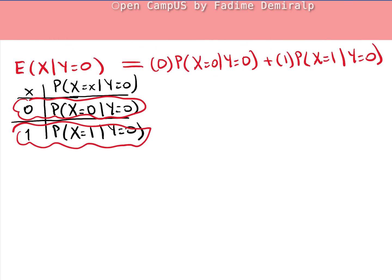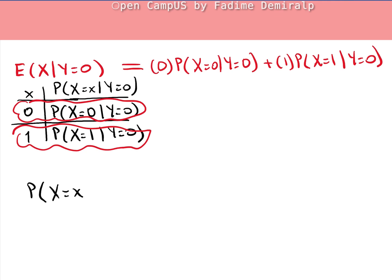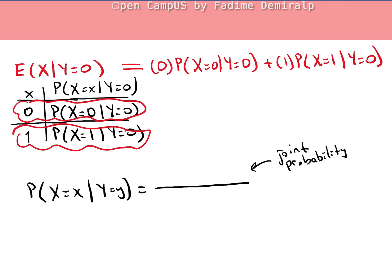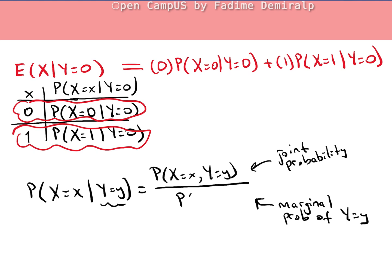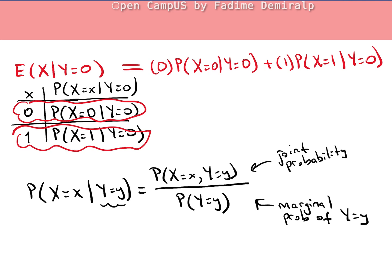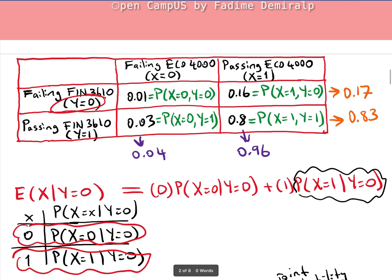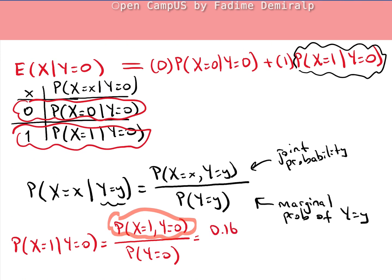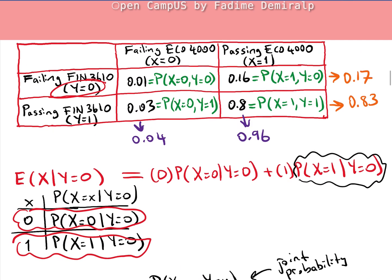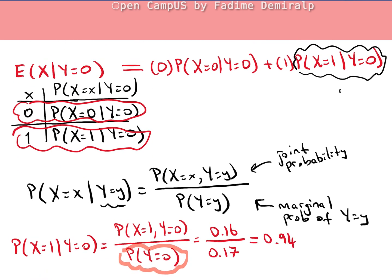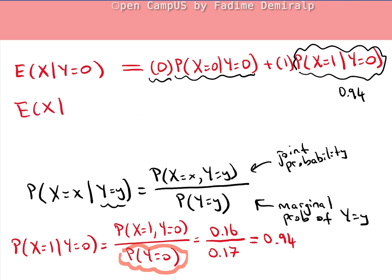The formula for conditional probability is: P(X = x | Y = y) = P(X = x, Y = y) / P(Y = y), i.e., the ratio of the joint probability to the marginal probability of the condition. Applying the formula: P(X = 1 | Y = 0) = 0.16 / 0.17 ≈ 0.94. Since P(X = 0 | Y = 0) will be multiplied by 0, it doesn't affect the answer, so the conditional expectation E(X | Y = 0) = 0.94.